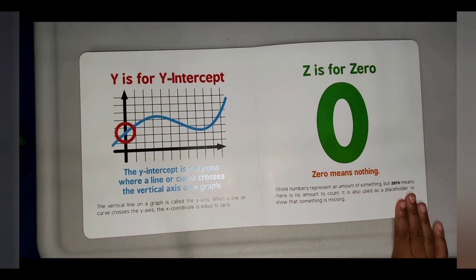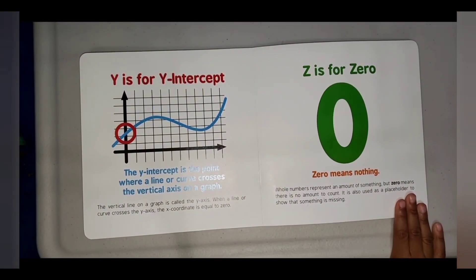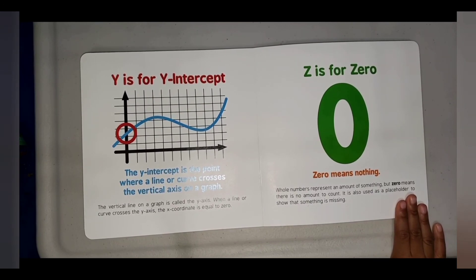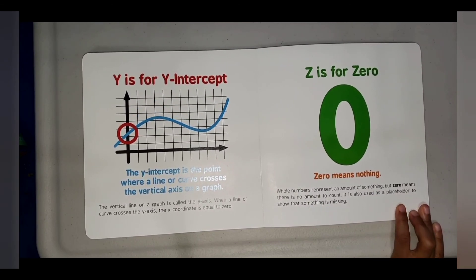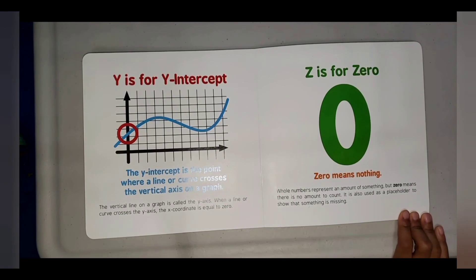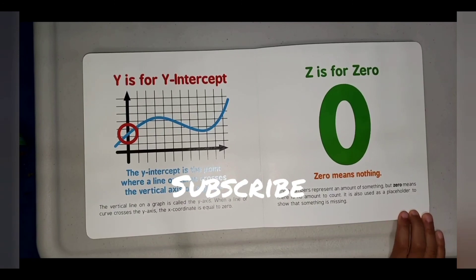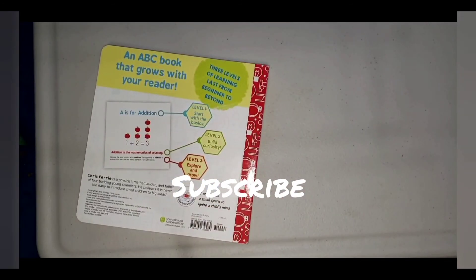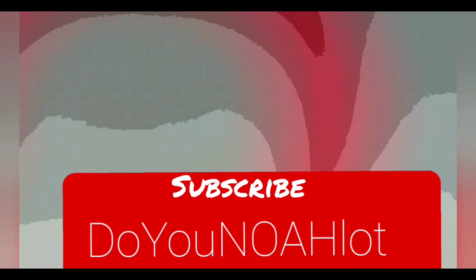Z is for Zero. Zero means nothing. Whole numbers represent an amount of something, but zero means there is no amount to count. It is also used as a placeholder to show something is missing. For more videos, subscribe to my YouTube channel, Do You Know A Lot.